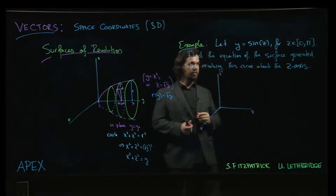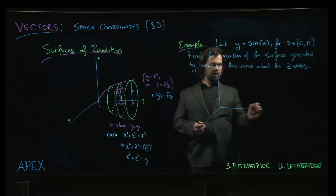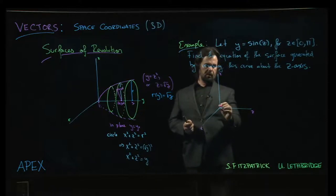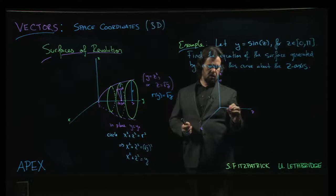Let's label our coordinate axes and sketch that curve. So y equals sine z in the yz plane is going to look something like—well, let's say here's 0, and up here is pi.